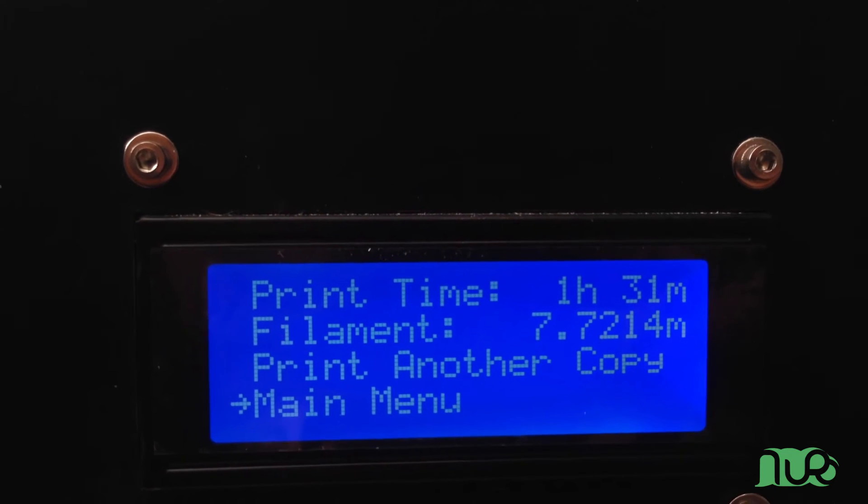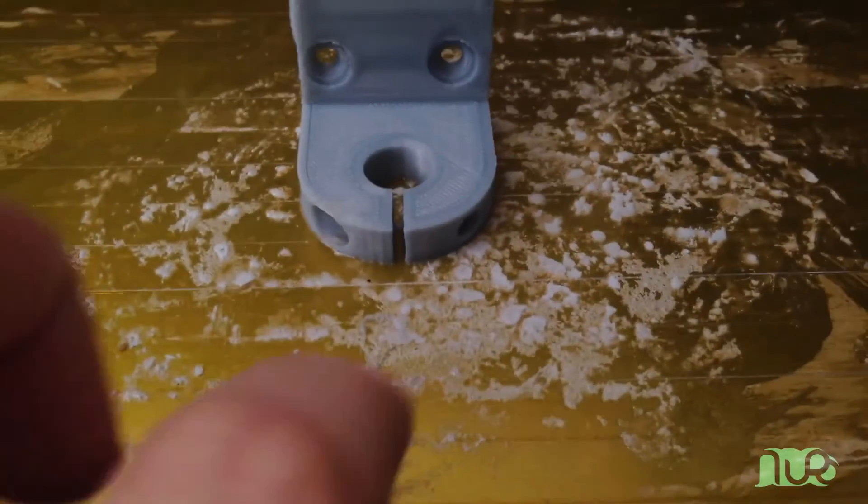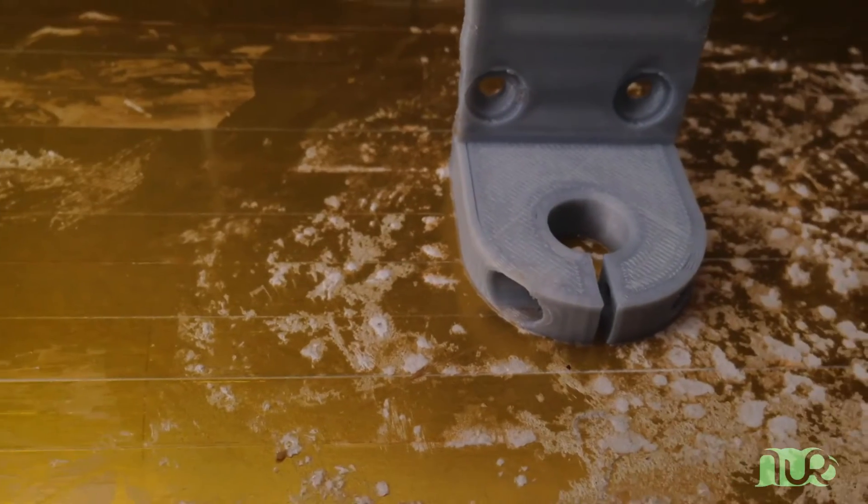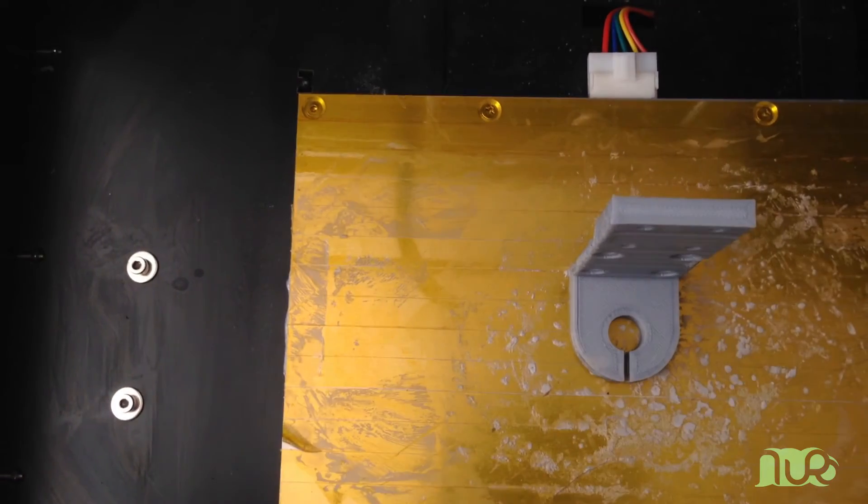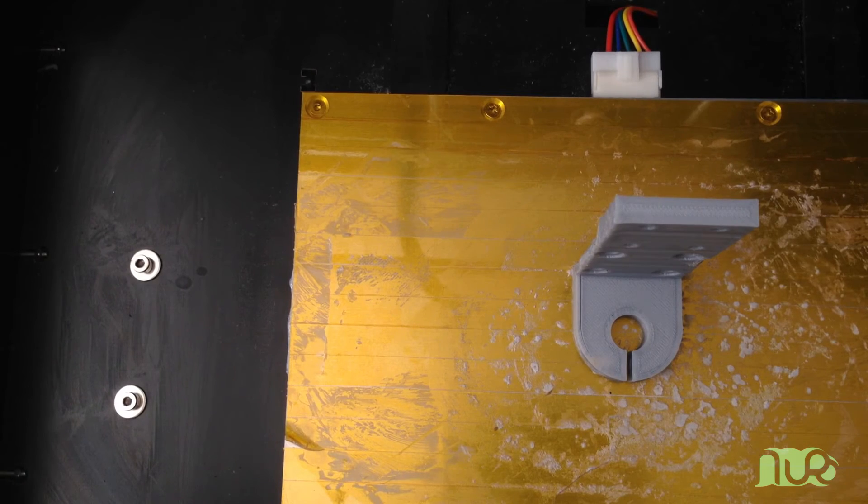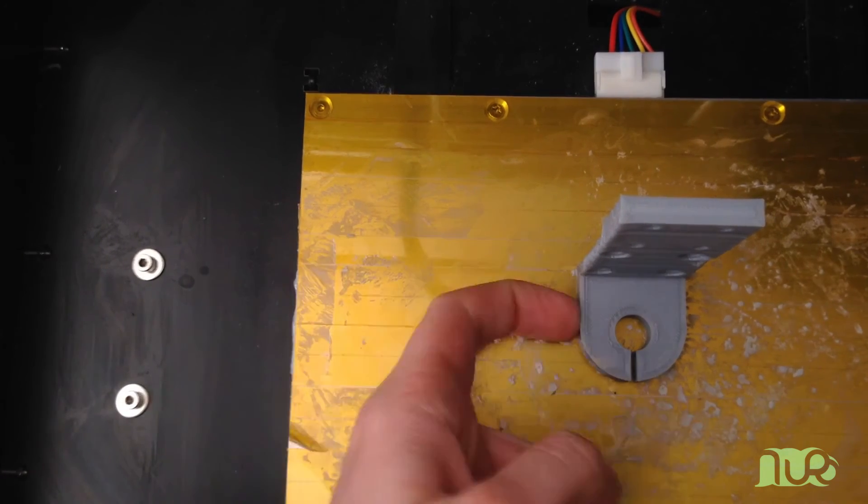So now it's one and a half hours later, and the print is finished. And as you can see, it looks really gunky on the build platform, but the print itself didn't warp or anything. So we now just have to get it off the platform, which could be really hard because as you see it really sticks to the platform.